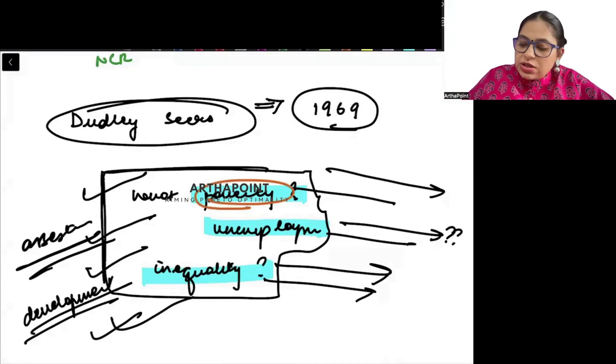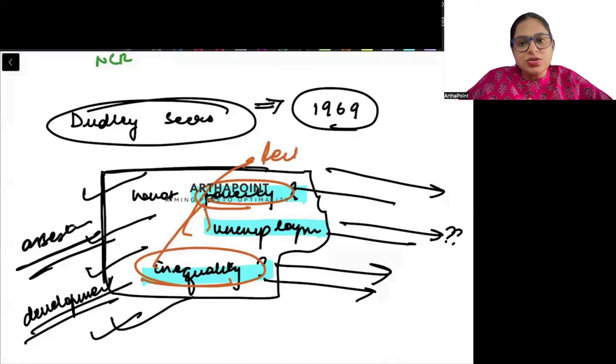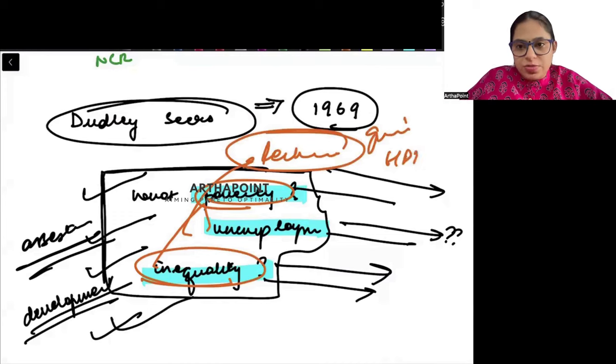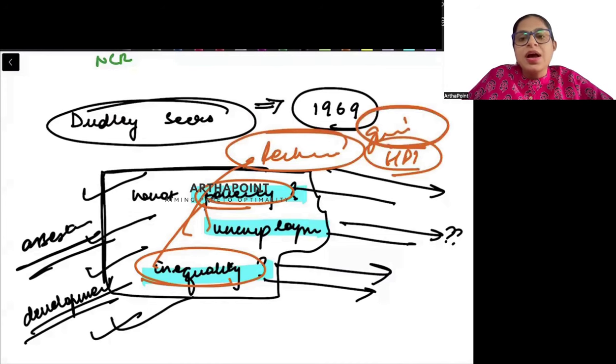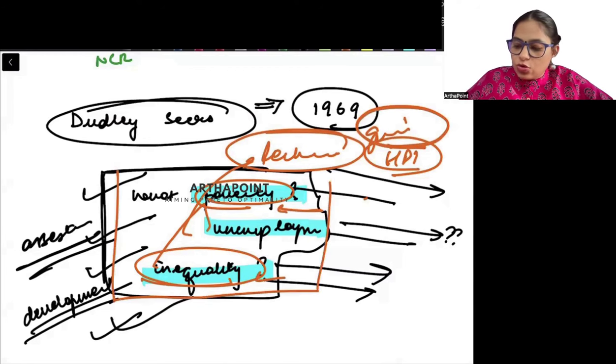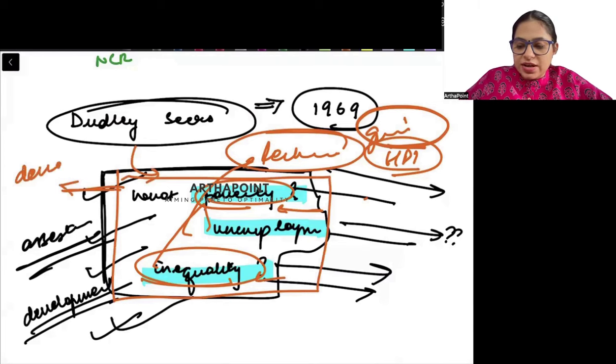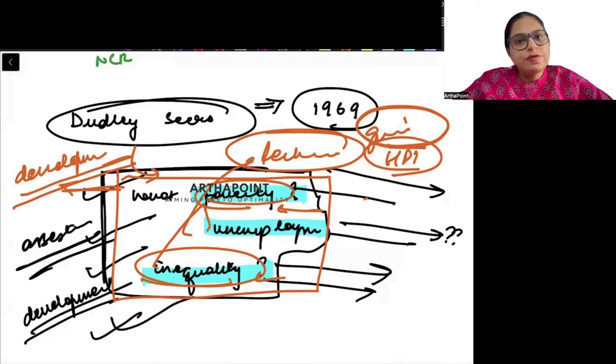How we measure poverty, how we measure inequality - like the Gini coefficient, human development index, different ways to measure poverty - that is some other lecture. Just for now, we want to know that we should ask these questions to understand whether we are on the path of development. Okay, take care.